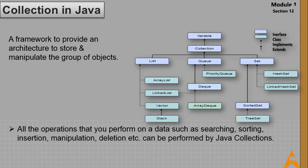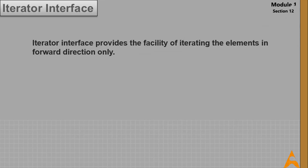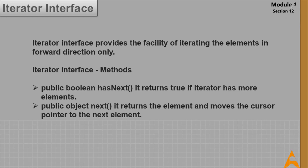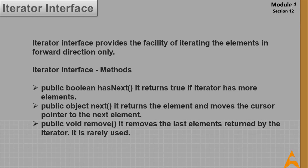Let's start with the iterator interface. The iterator interface provides the facility of iterating elements in the forward direction only. There are three methods: public boolean hasNext(), which returns true if the iterator has more elements; public Object next(), which returns the element and moves the cursor pointer to the next element; and public void remove(), which removes the last element returned by the iterator — it is rarely used.